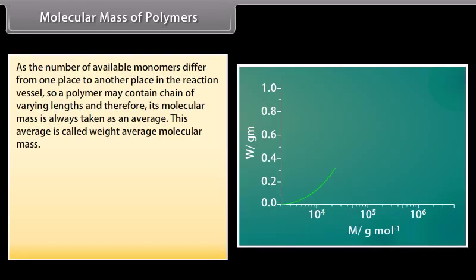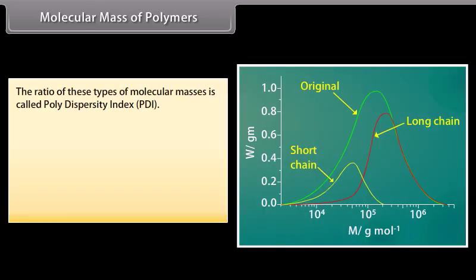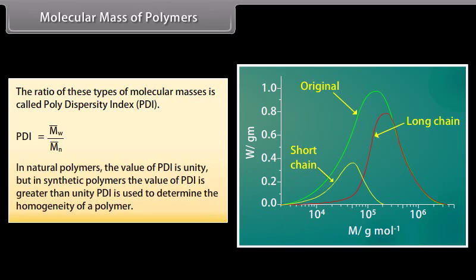During the formation of polymers, the growth of polymer chains depends upon the number of monomers available in the vicinity. As the number of available monomers differs from place to place in the reaction vessel, a polymer may contain chains of varying lengths, and therefore its molecular mass is always taken as an average called weight average molecular mass. The ratio of these types of molecular masses is called polydispersity index (PDI). In natural polymers, PDI is unity; in synthetic polymers, PDI is greater than unity. PDI is used to determine the homogeneity of a polymer.